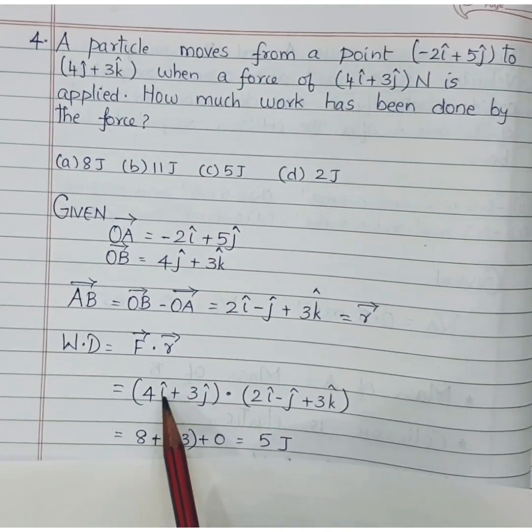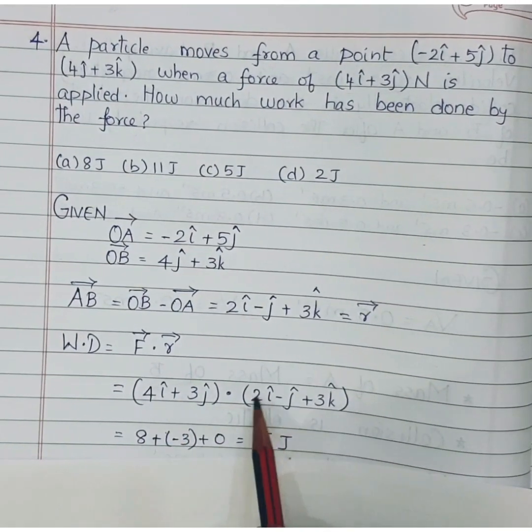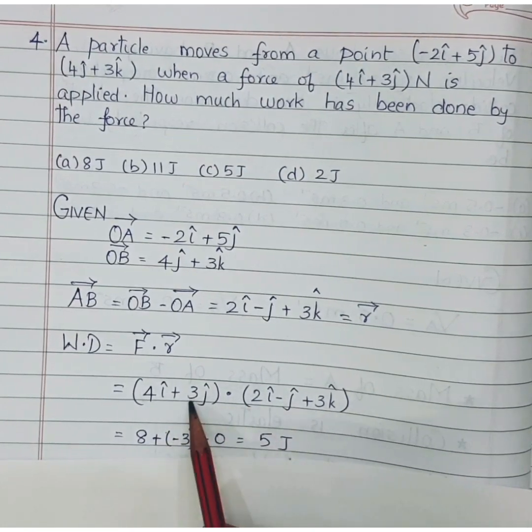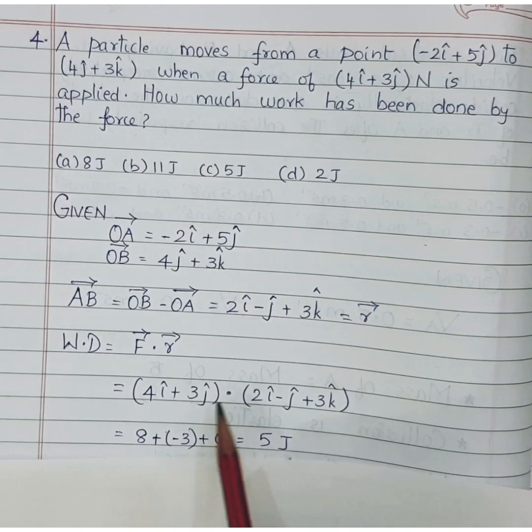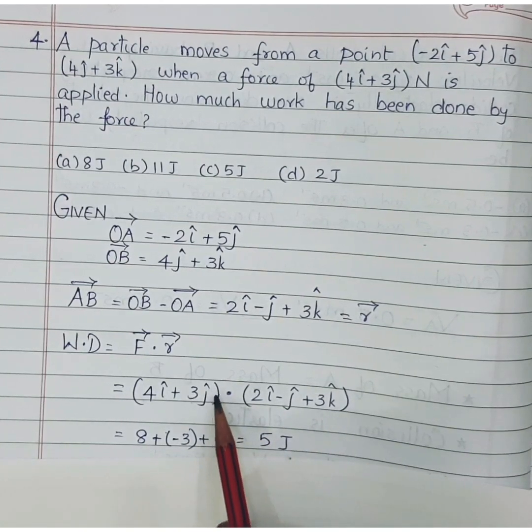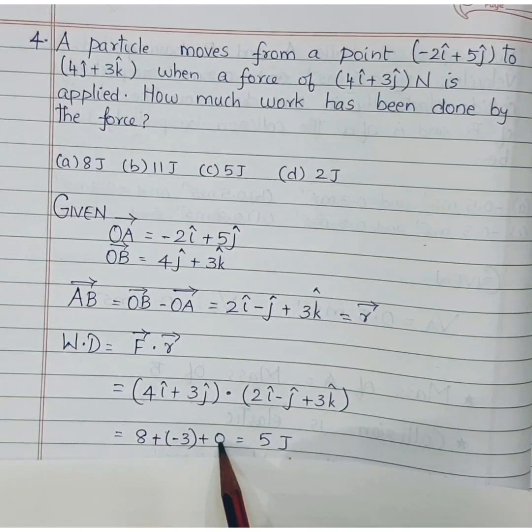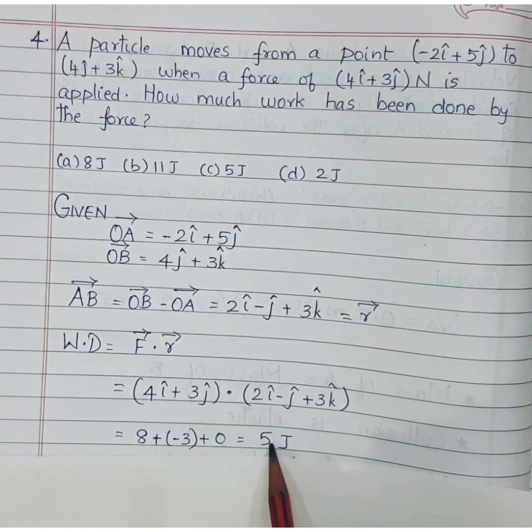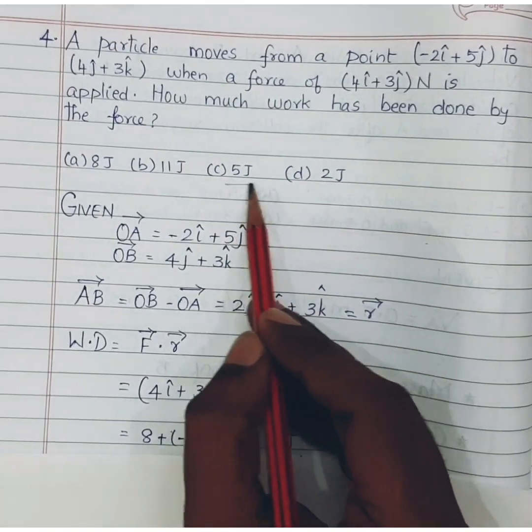How to find the dot product? First multiply the coefficient of i with the coefficient of i here, so 4 into 2 is 8. Then j and j, 3 into minus 1 is minus 3. And k, here we do not have any k component so 0 into 3 is 0. Then we have to add all the 3, so 8 plus minus 3 is 5. So option C is the correct answer.